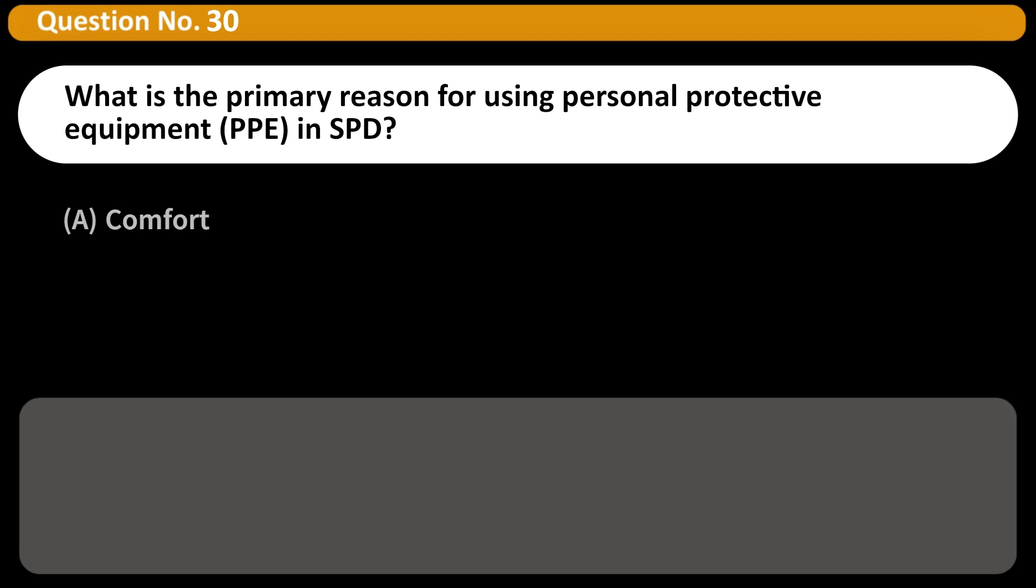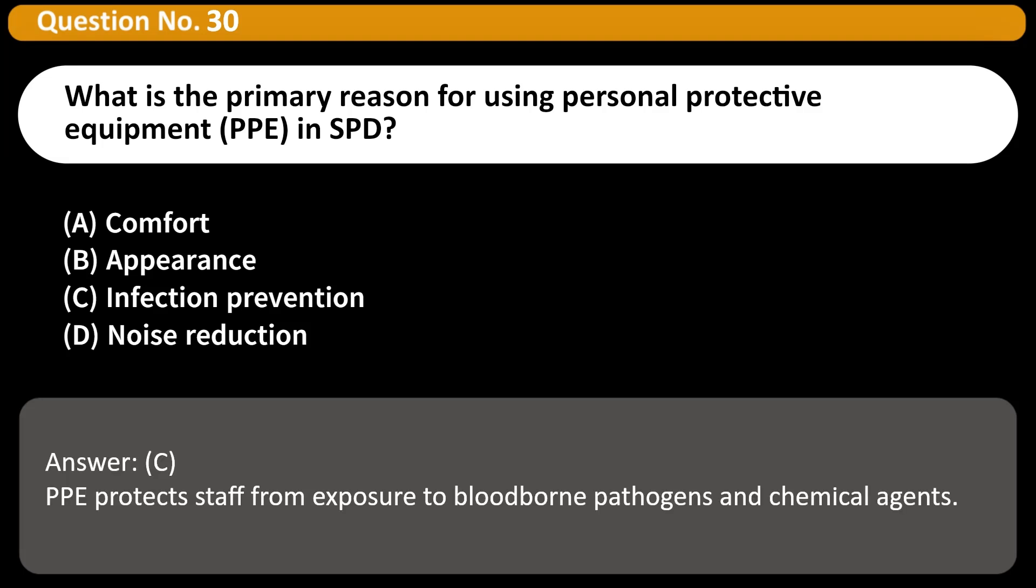What is the primary reason for using personal protective equipment (PPE) in SPD? A. Comfort, B. Appearance, C. Infection prevention, D. Noise reduction. Answer C. PPE protects staff from exposure to blood-borne pathogens and chemical agents.